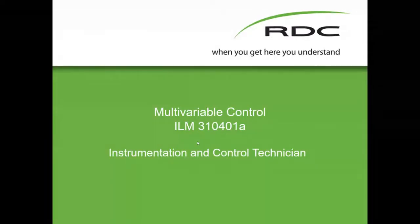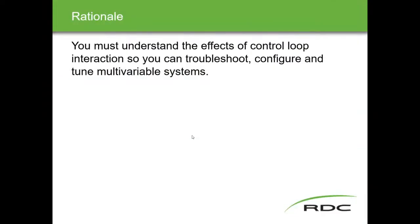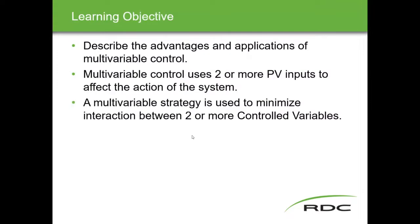The first part is going to be very quick — just a review from last time. We'll go quickly up to the point where we left off and then slow down. We're talking about control loop interaction and multi-variable control, using two or more PV inputs to affect the action of the system. The strategy we're developing is designed to eliminate the interaction that one loop has on the other and vice versa.